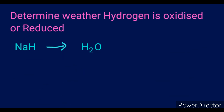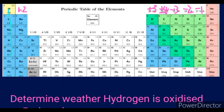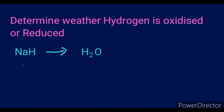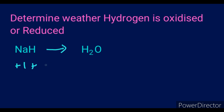Here's another example — determine whether hydrogen is oxidized or reduced. On the left hand side, we have a sodium hydride compound with total charge zero. Hydrogen is in group one with charge +1 normally. We solve: +1 + x = 0, so x = −1. The charge of hydrogen in this compound is −1.